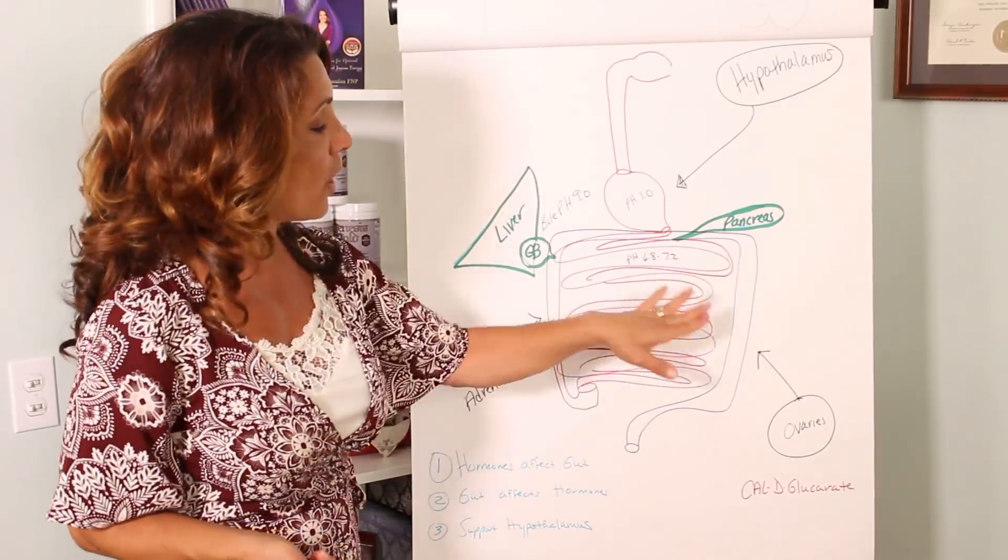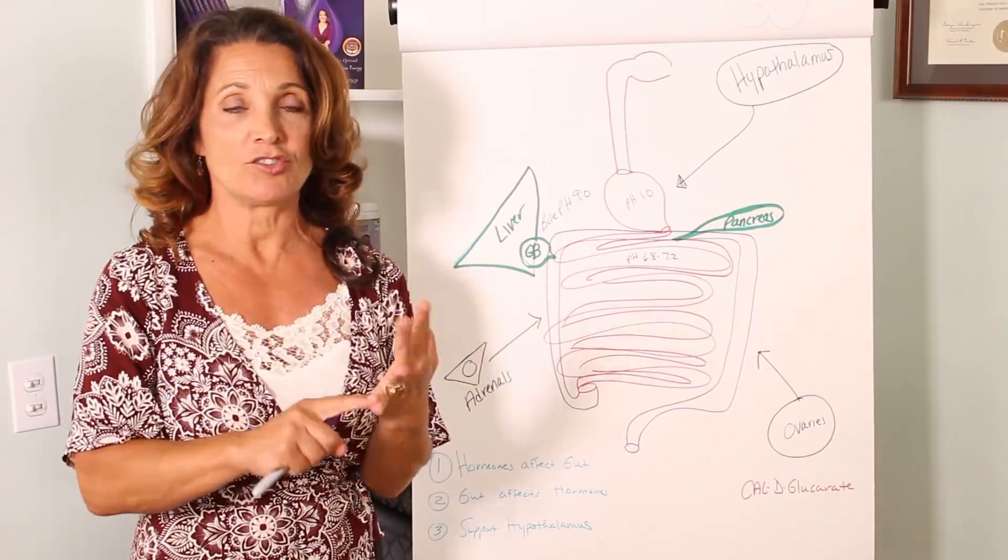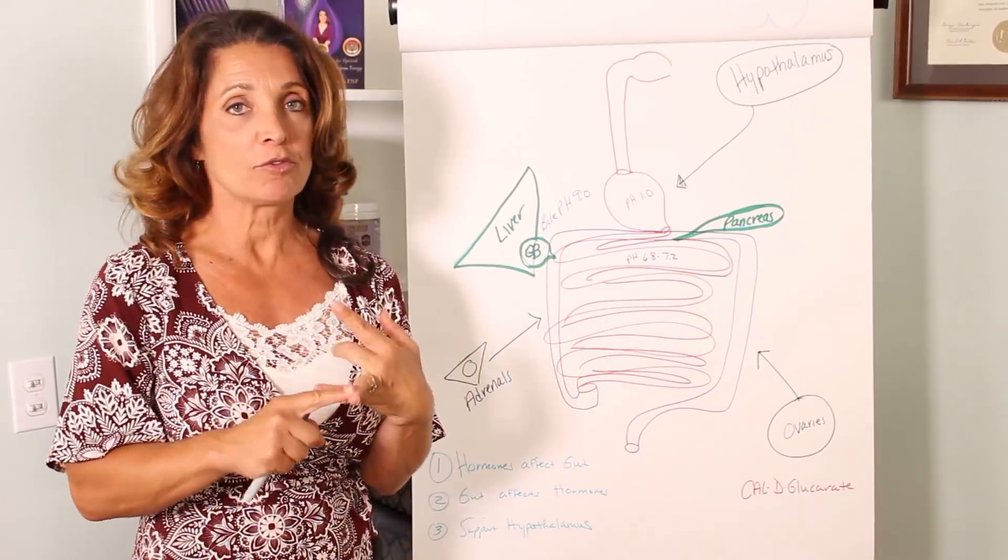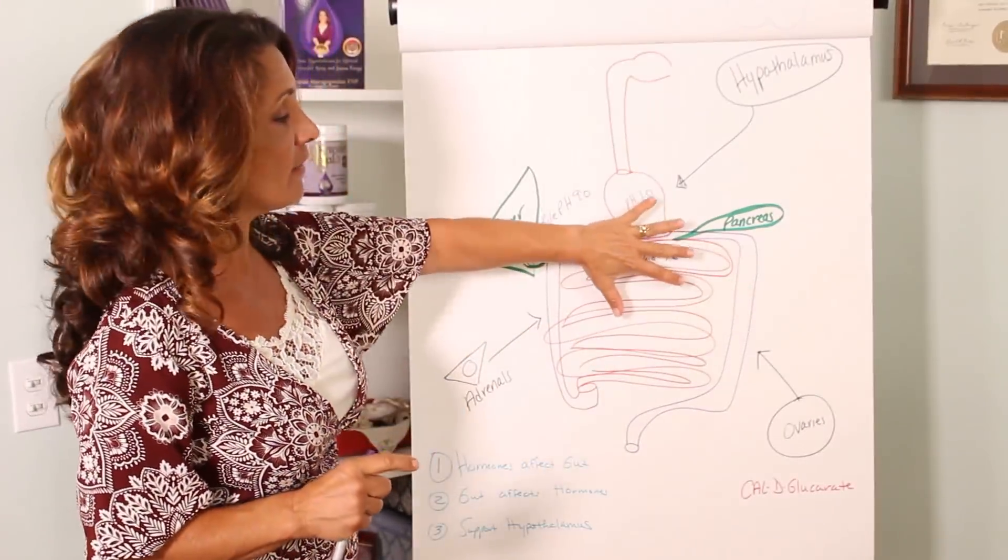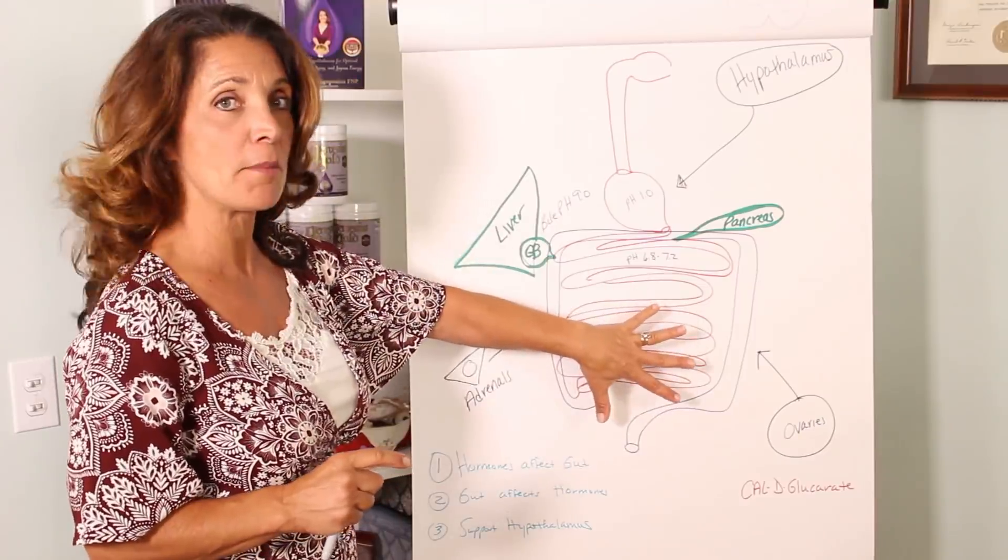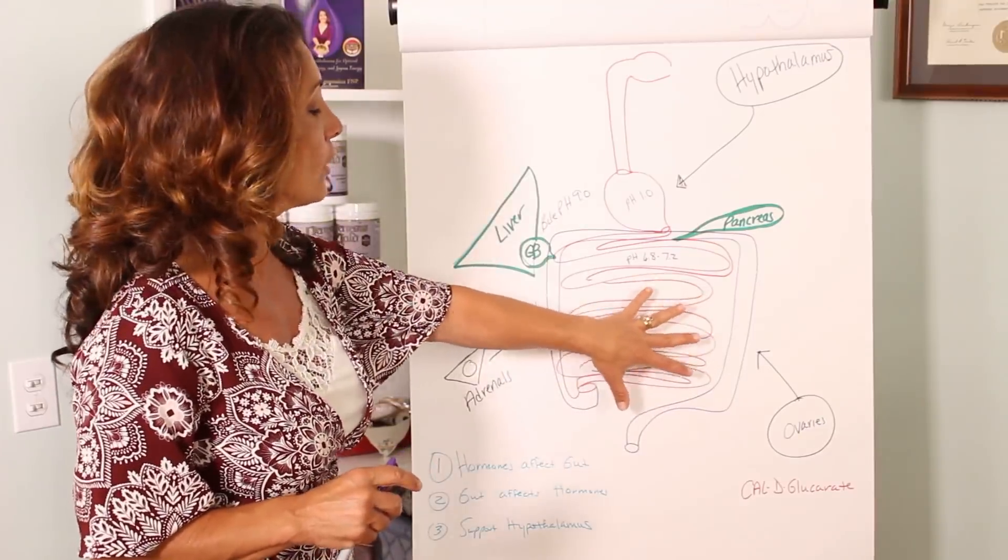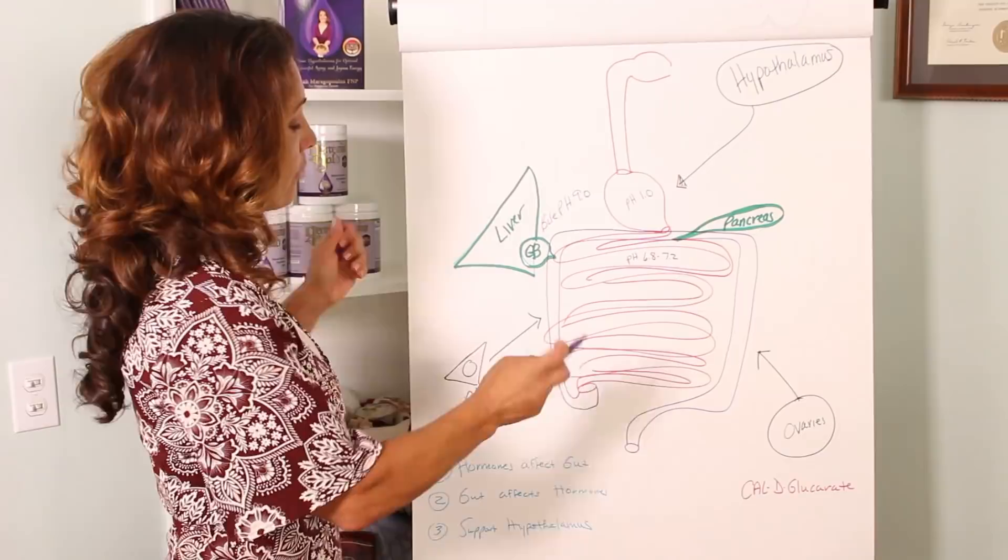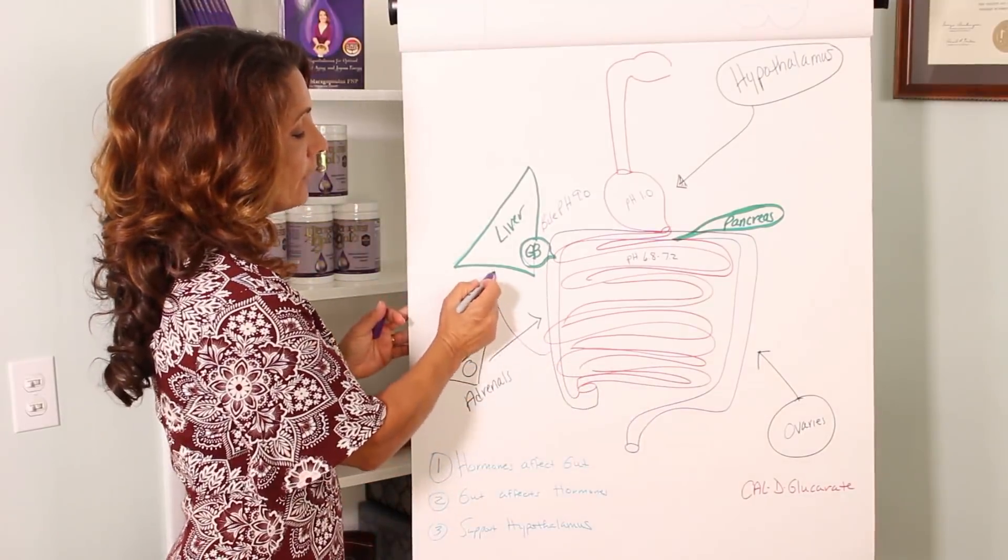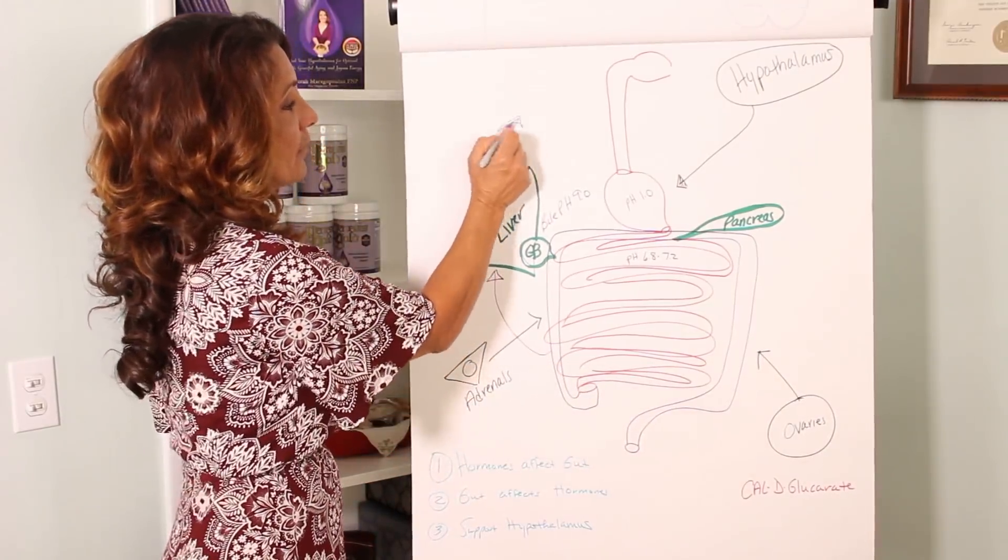That 24 feet of small intestine is where digestion and absorption occurs. Digestion in the top half, absorption in the bottom half. And whatever is absorbed actually then has to pass through and back through the liver before it goes into the rest of the body.